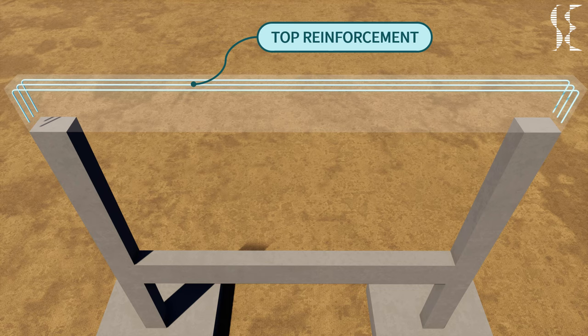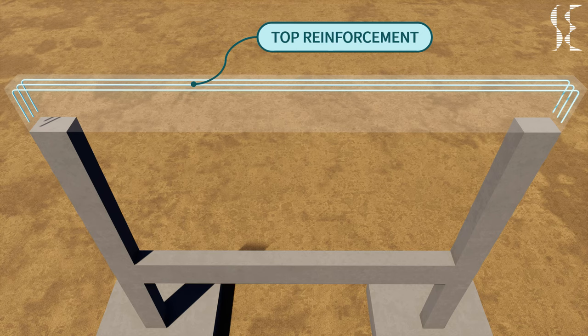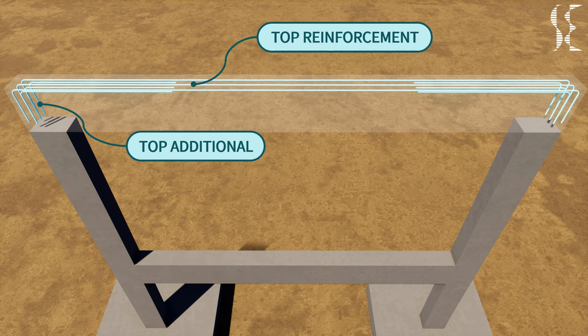Top reinforcement also resists the bending stresses produced at the supports. If additional reinforcement is required by design, they are provided a second layer below the top layer and are extended by one-fourth of span length from face of column or as required by design.